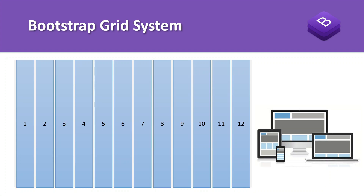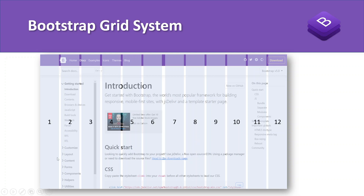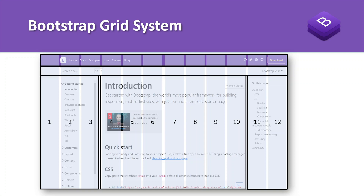The Bootstrap grid system is one of the reasons why Bootstrap became so popular. In Bootstrap we use a 12-column grid system, meaning you can divide your entire screen width into 12 equal portions. For example, on the Bootstrap 5 documentation page, the entire website is divided into 12 parts. Each section takes some portion of the grid — the left side takes 3 columns, the middle takes 7, and the right takes 2.